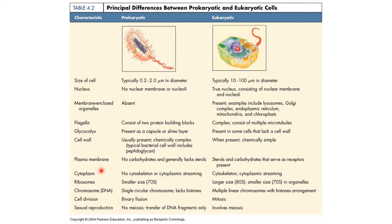Regarding the plasma membrane: prokaryotes lack carbohydrates and generally lack sterols. In eukaryotes, sterols and carbohydrates that serve as receptors are present on the plasma membrane. Regarding cytoplasm: no cytoskeleton or cytoplasmic streaming is observed in prokaryotes, whereas in eukaryotes both cytoskeleton and cytoplasmic streaming are present. Prokaryotic ribosomes are smaller, being 70S in size.